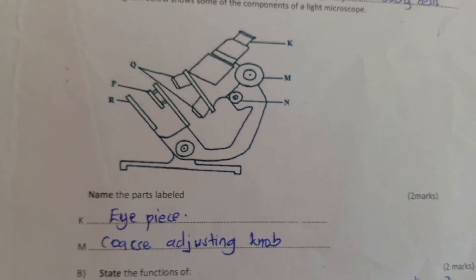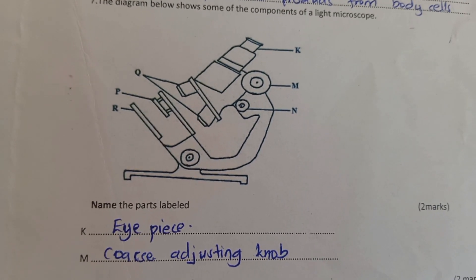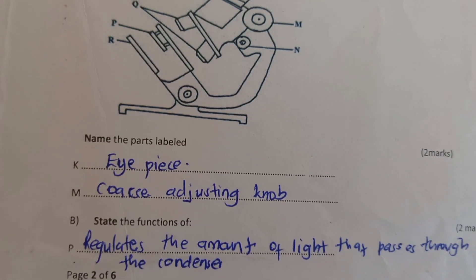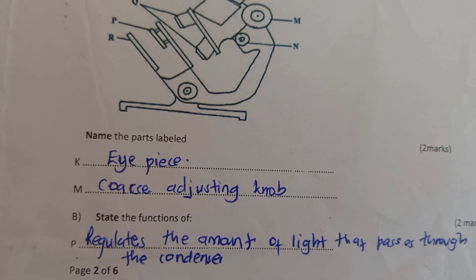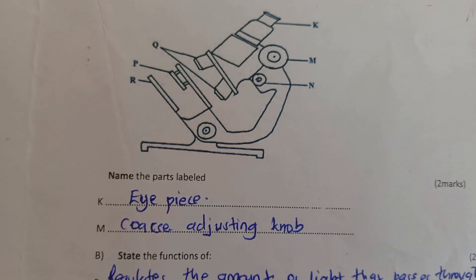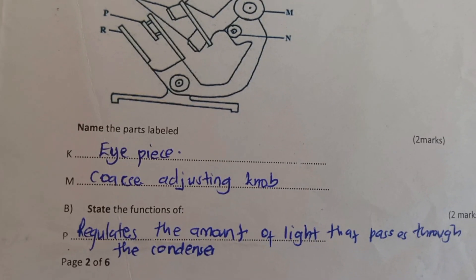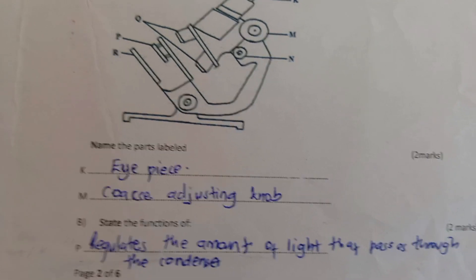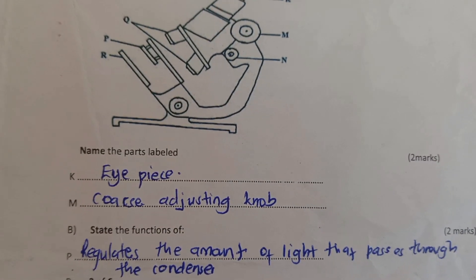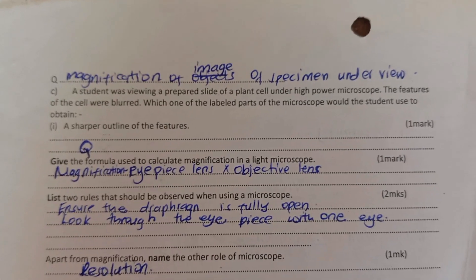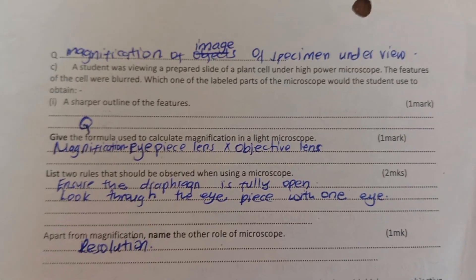You are given a diagram of a microscope. Label K — that is the eyepiece lens. Label M — that is the coarse adjustment knob. You are told to state the function of P. P is the condenser — it regulates the amount of light passing through. Label Q is for magnification of the specimen.